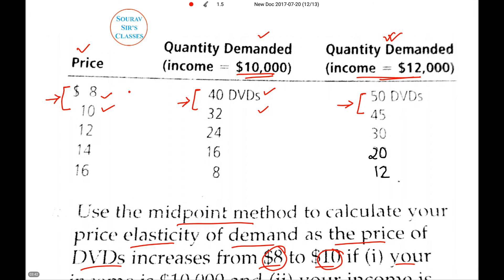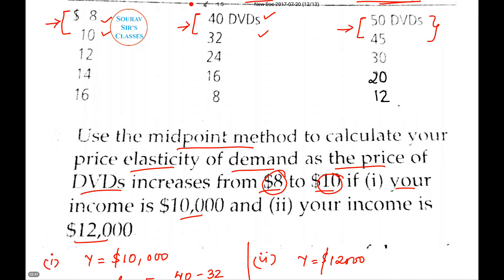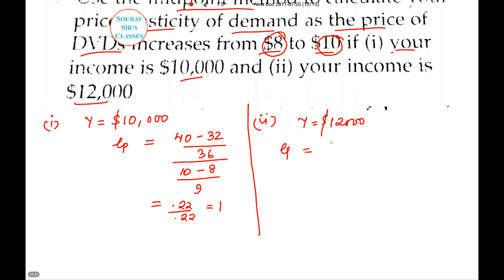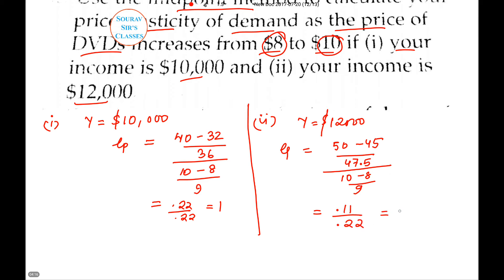The price rises from $8 to $10, and the quantity demanded goes from 50 to 45. Using the midpoint formula: 50 minus 45 divided by the midpoint, which is 50 plus 45 divided by 2, equaling 47.5. The price part is 10 minus 8 divided by 9. This gives us 0.11 divided by 0.22, which equals 0.5.